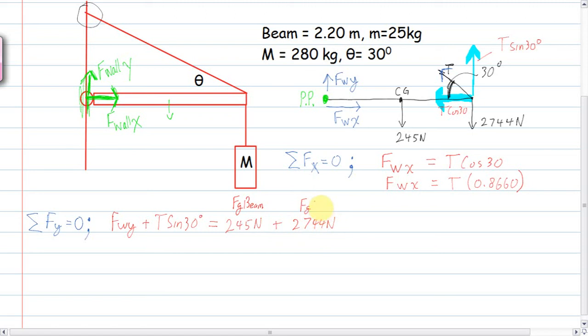Okay. If I add those two numbers up, what do I get? 2,989 newtons. Okay. And that sine 30 is a half. So I'll just rewrite it down. Force on the wall in the y direction plus one half T, because that's what sine 30 is, is a half, is equal to 2989 newtons.